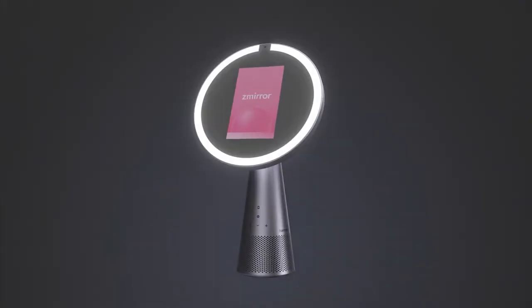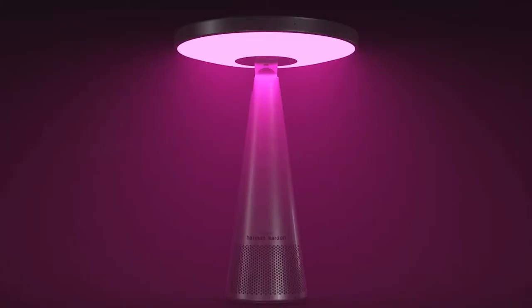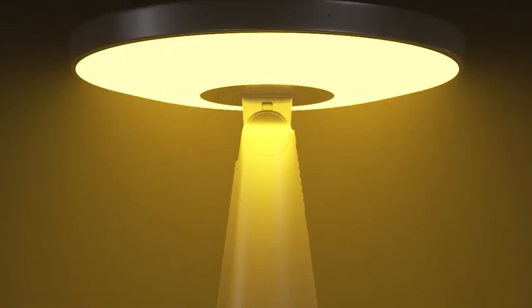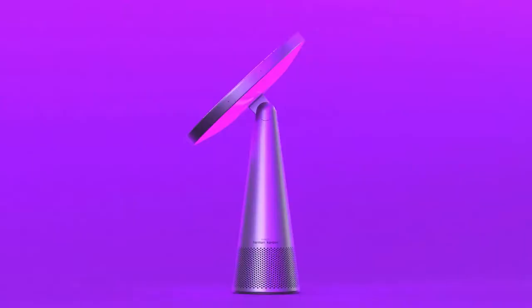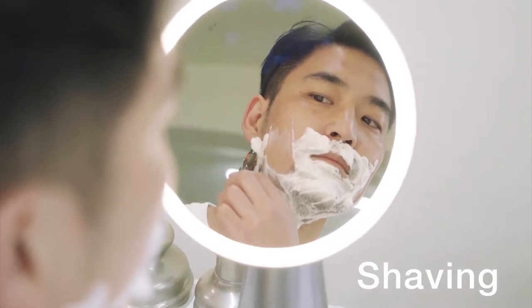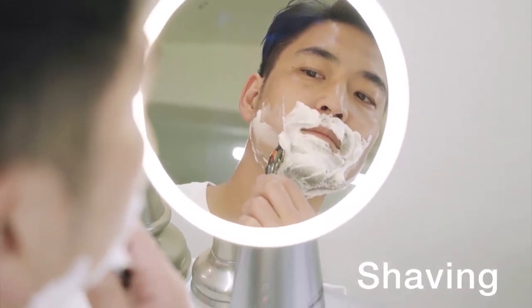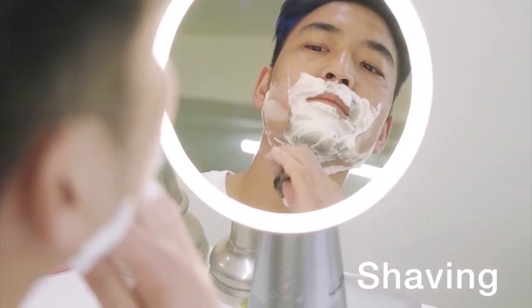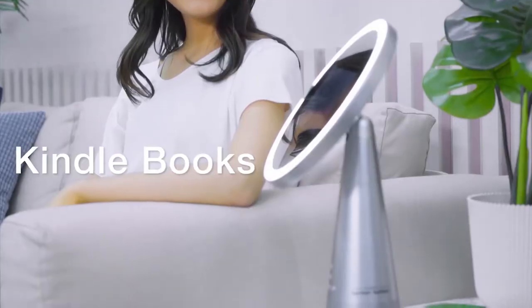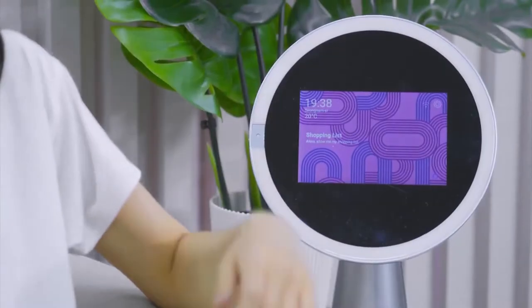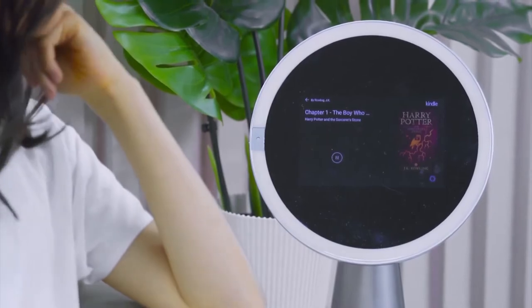Z mirror connects easily to Bluetooth and Wi-Fi, making you enjoy the latest playlist and podcast straight from your phone through the sound system available on Z mirror. Z mirror does all that and also improves your productivity and multitasking through your morning routine. It also enables you to set and see scheduled daily activities, view news or play music.